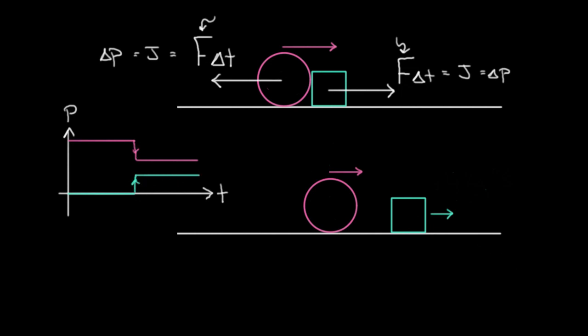What I'm saying is that these two jumps are the same. If this thing lost, let's say it lost four units of momentum, well, then this green cube has to gain four units of momentum.